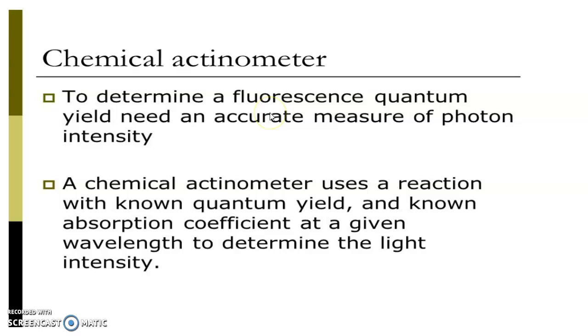Next, we will move to the chemical actinometers. Actinometer is used to determine the fluorescence quantum yield need an accurate measure of photon intensity. It is used to measure the photon intensity. So, a chemical actinometer uses a reaction with known quantum yield and known absorption coefficient at a given wavelength to determine the light intensity.